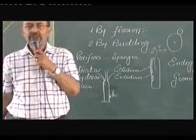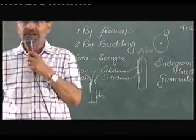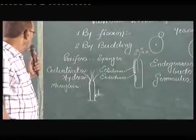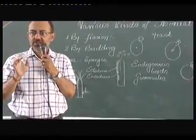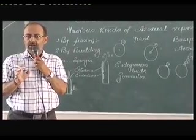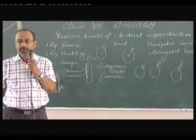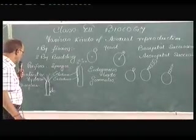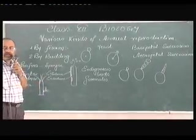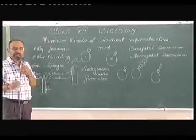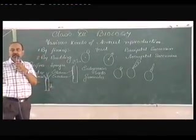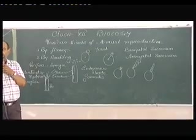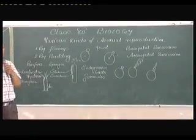The small buds produced from the ectoderm lining of hydra have a structure similar to the parent body. They remain attached to the parent body for a certain period until they attain maturity. Finally, they detach and come into the water, starting to live their life freely.